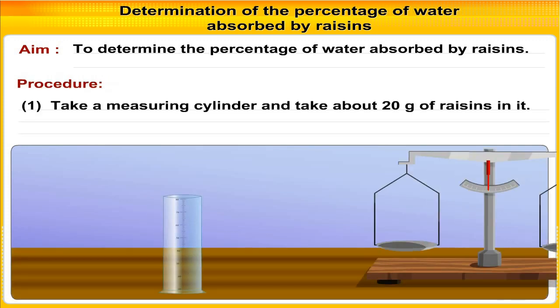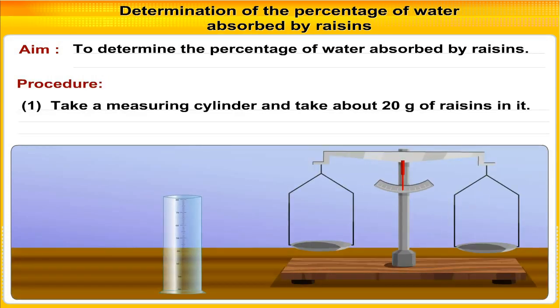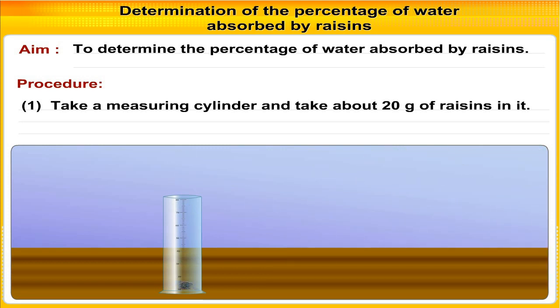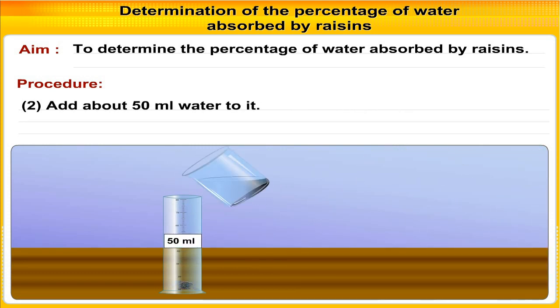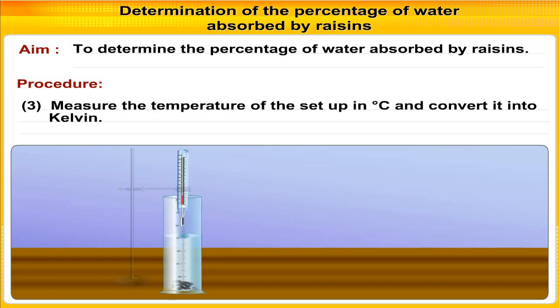Procedure: Take a measuring cylinder and take out 20 grams of raisins in it. Add about 50 ml water to it. Measure the temperature of the setup in degrees Celsius and convert it into Kelvin.